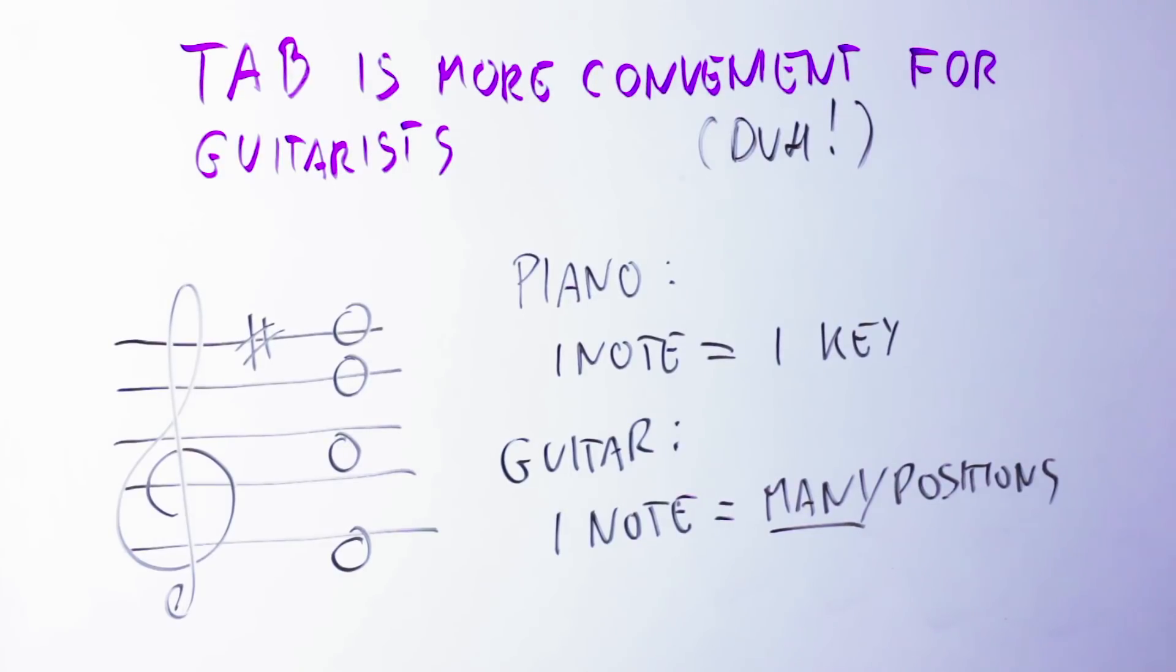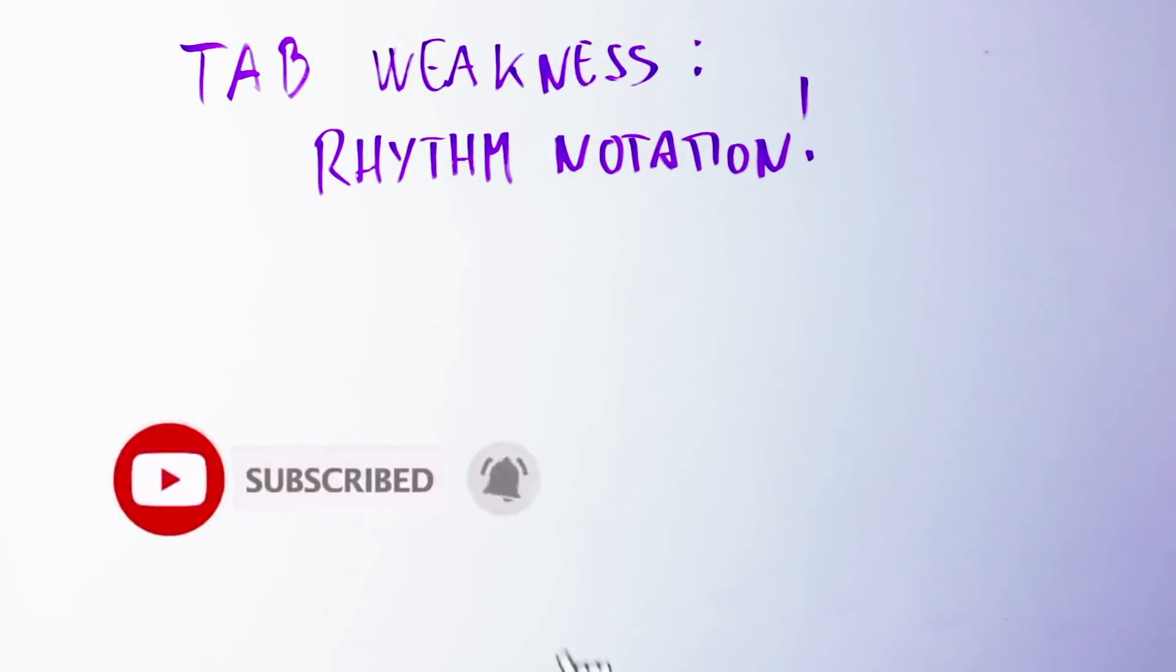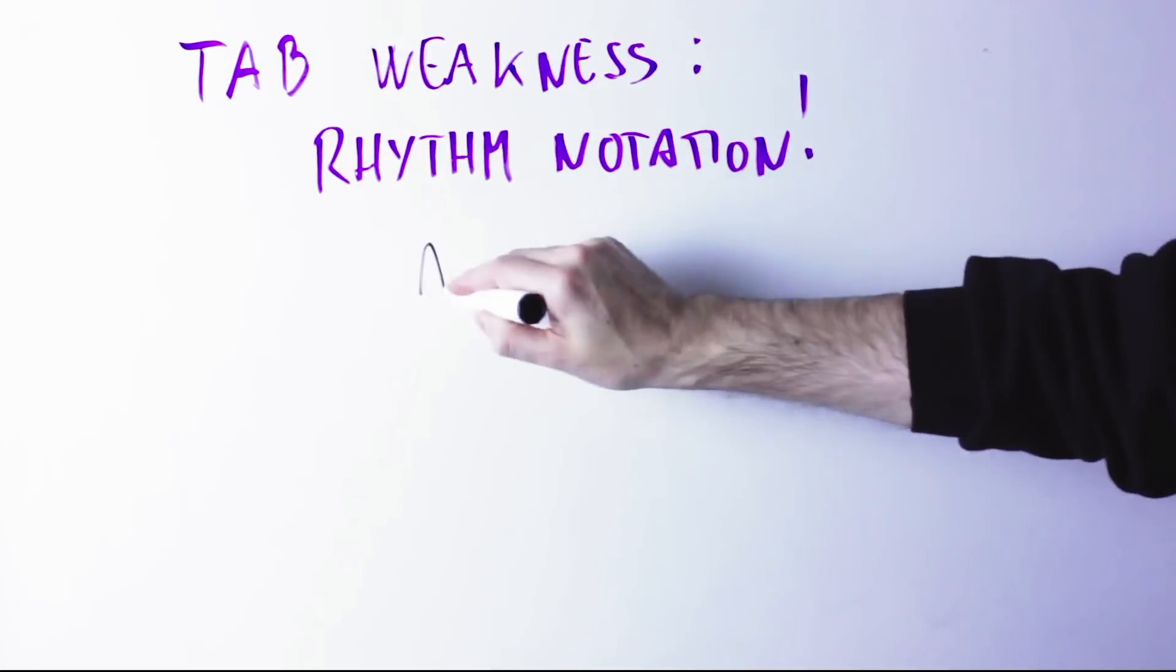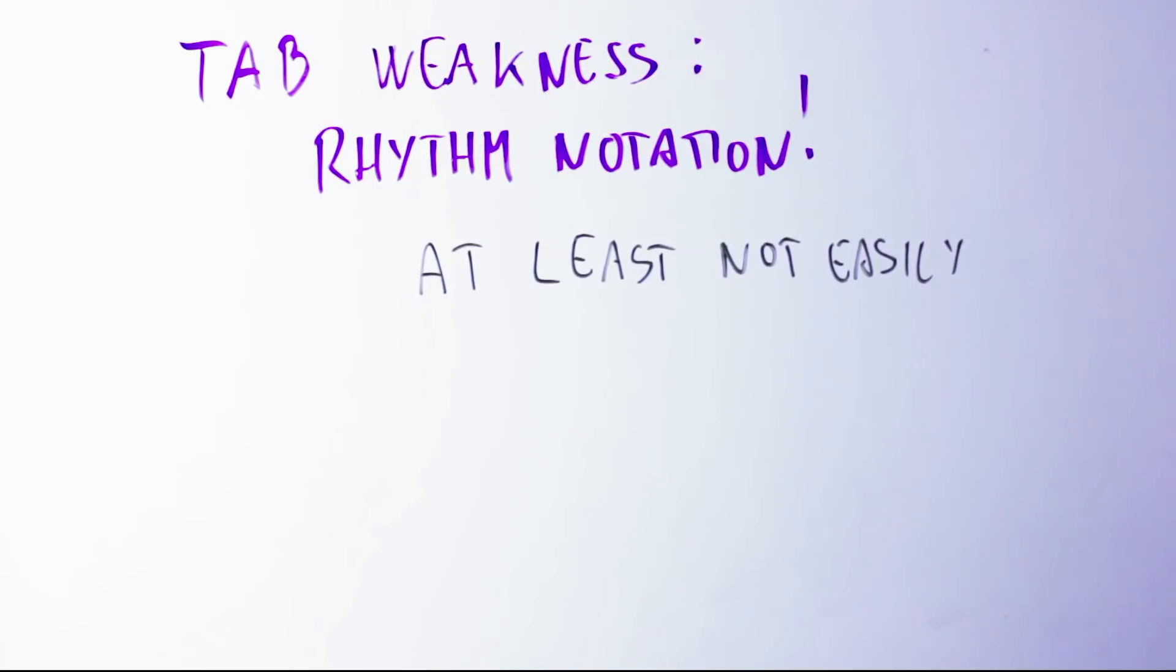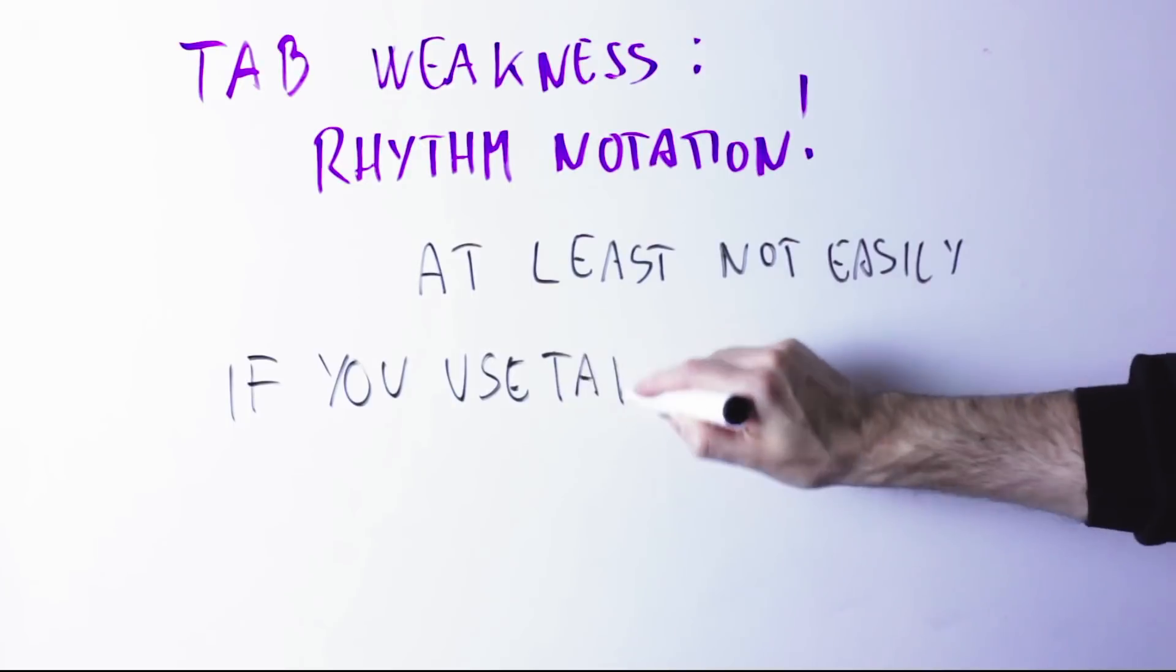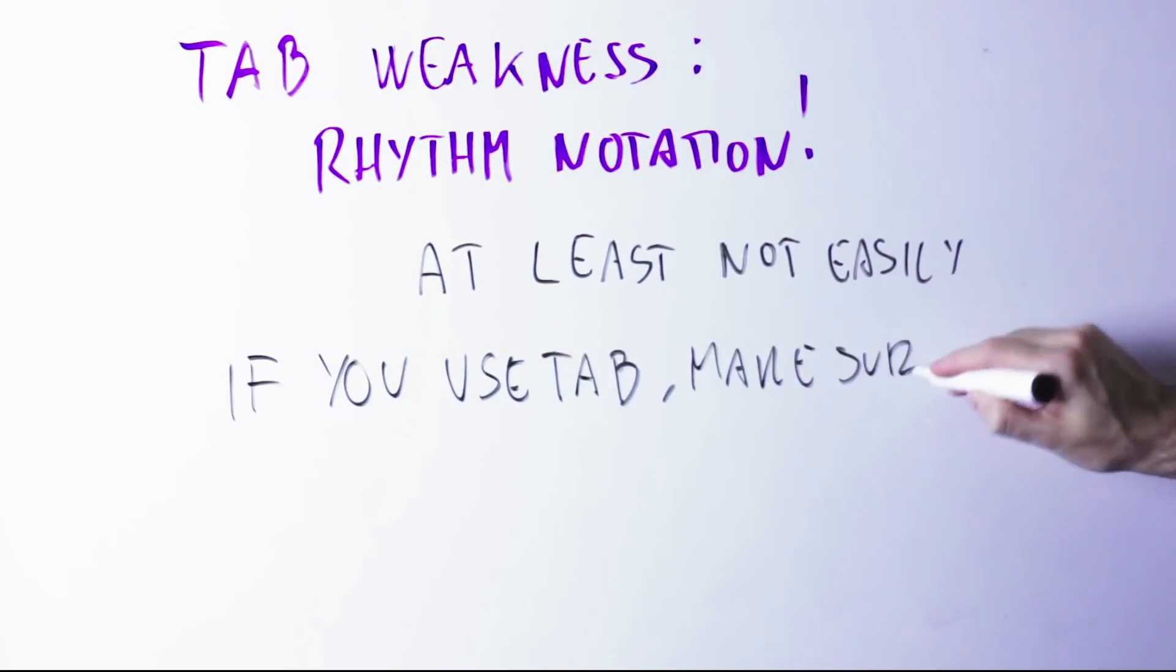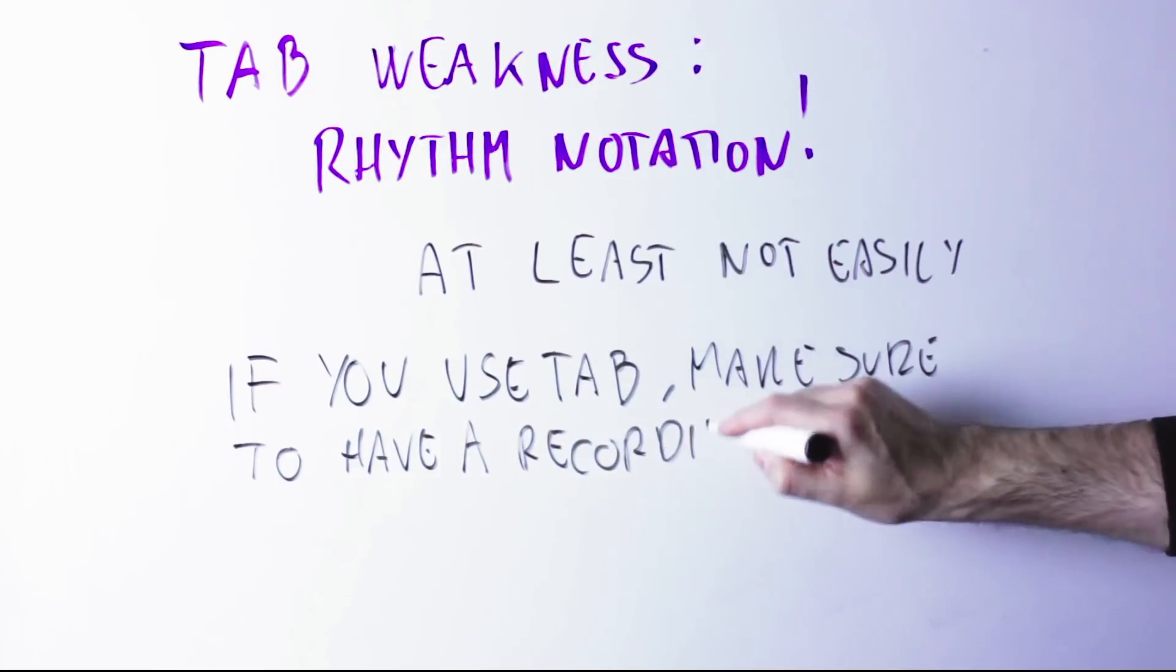Now tablature, of course, has also a fundamental weakness, but I want to make it clear immediately. Tablature cannot really notate the rhythm of the notes. Okay, there have been people who have tried to create a rhythm notation for tablature, there has been more than one proposal, but the fact is none of those is ideal. Standard notation is definitely superior in notating rhythms.